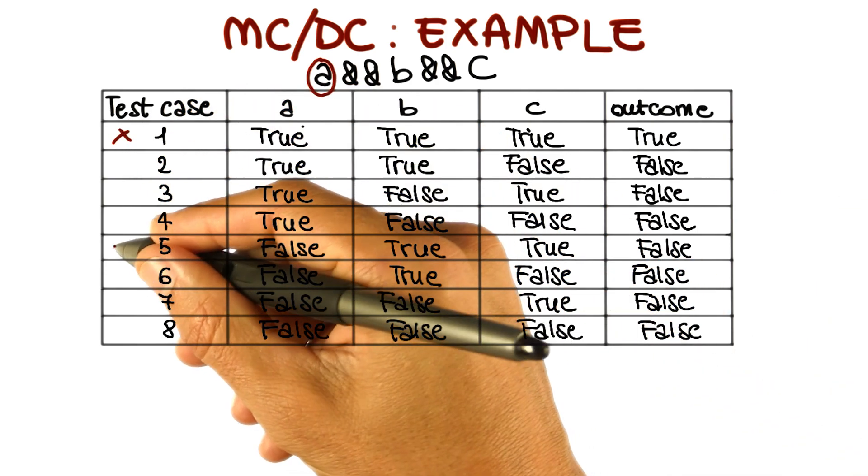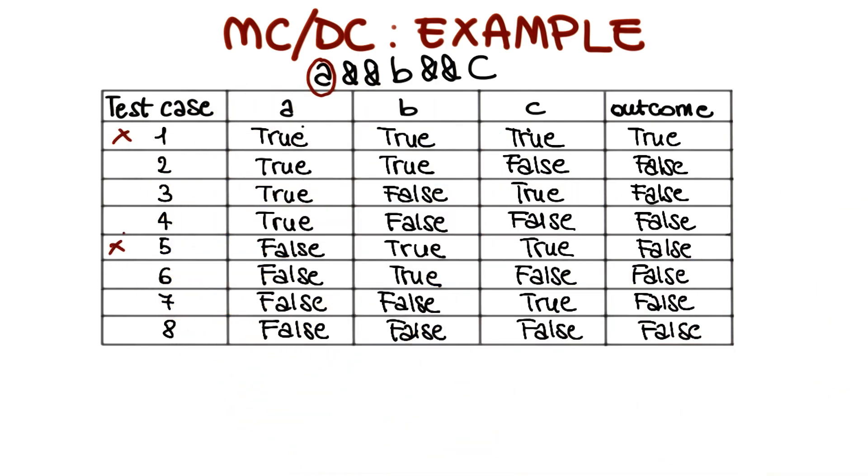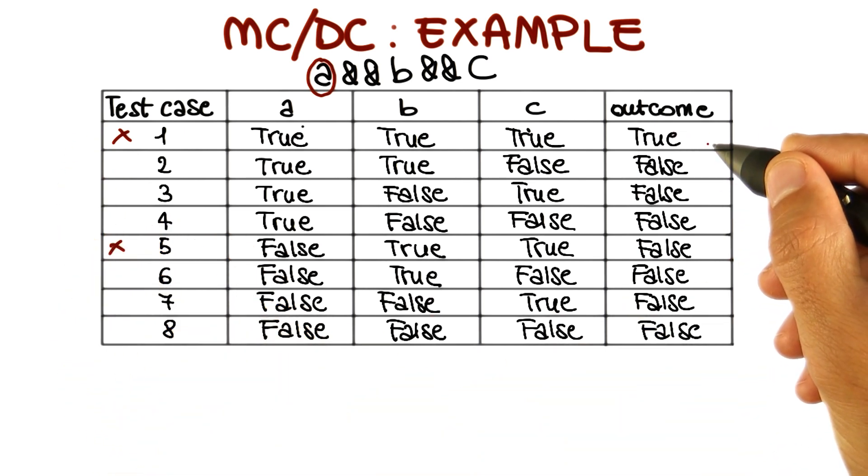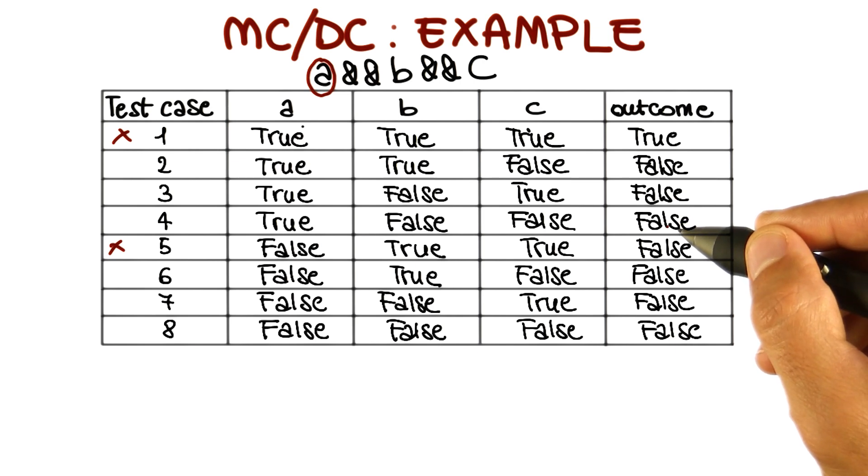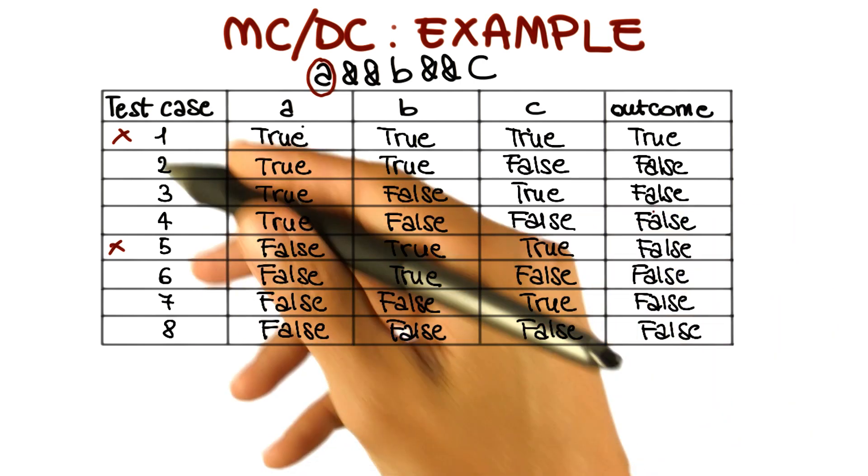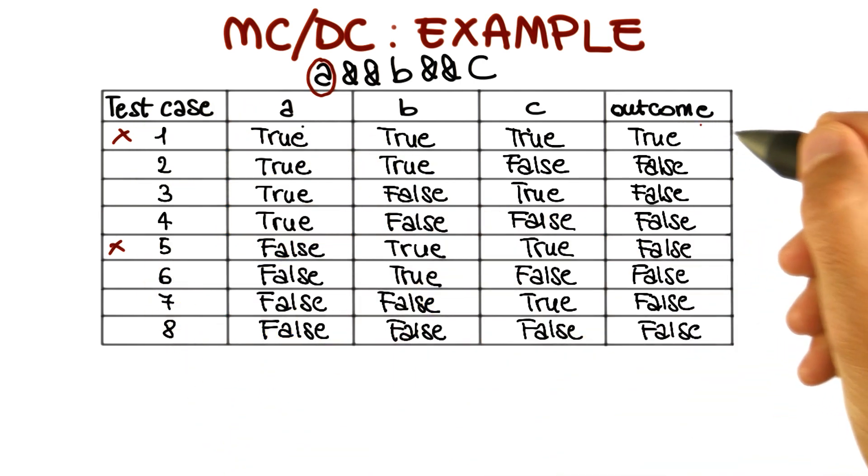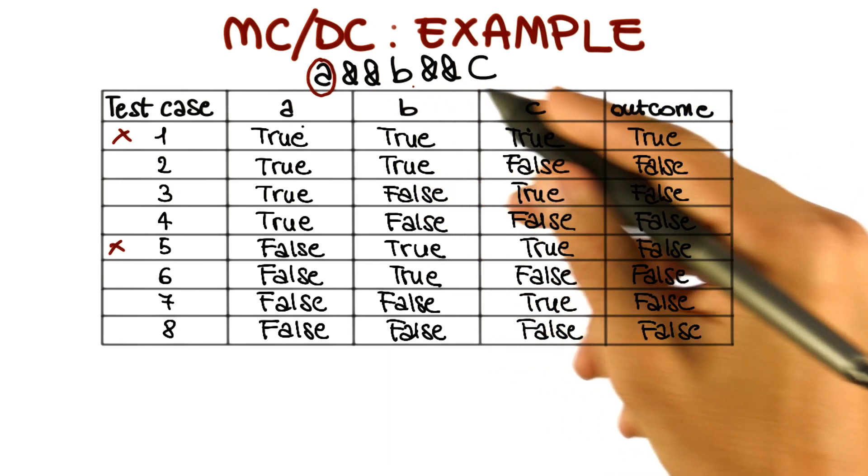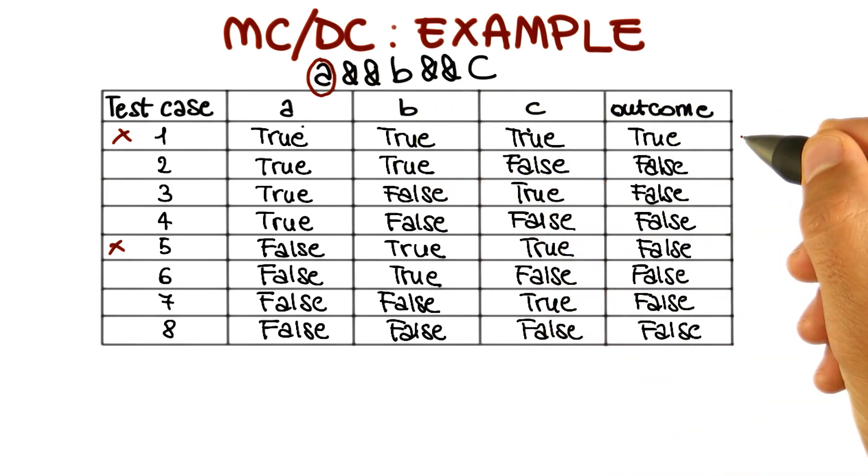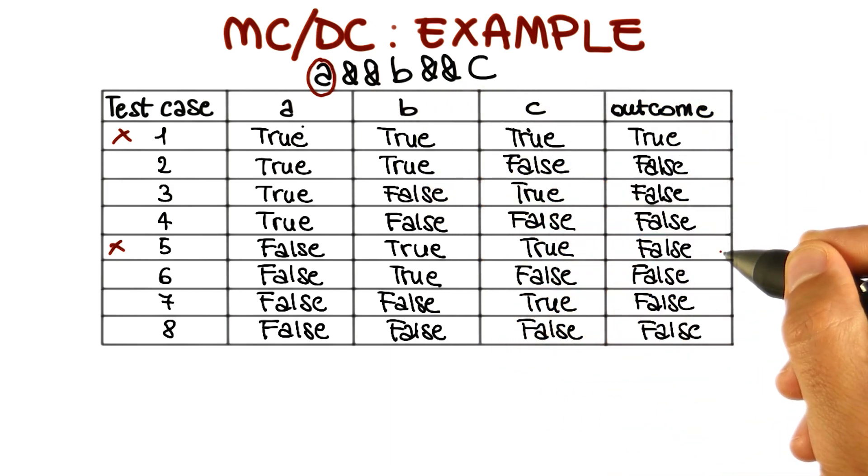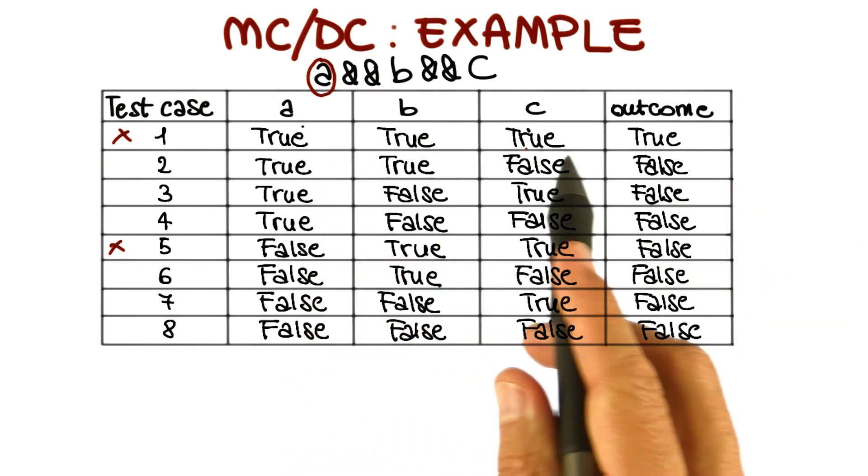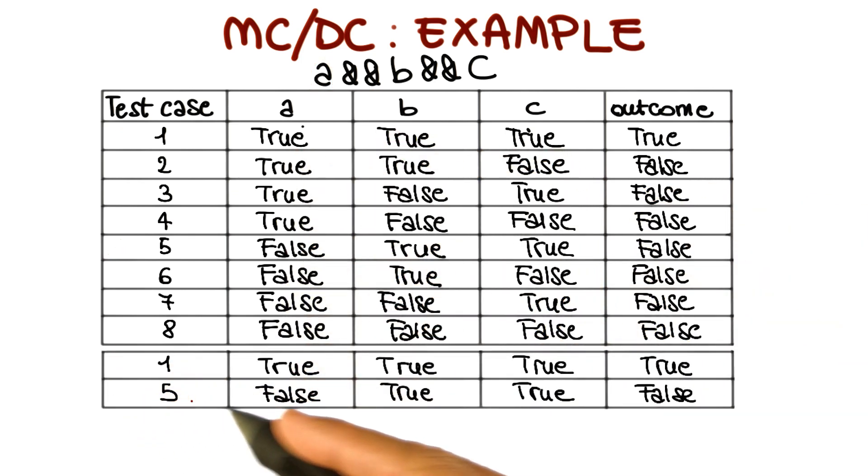If we look at the table, we can see that this is true for test cases one and five. If we look at these two test cases, we can see that the overall value of the predicate in the two cases is true and false, and that the only difference between the value of the conditions is in the value of A. So these two test cases satisfy exactly what we wanted. There are two test cases in which the value of A independently decides the overall value of the predicate. What we do, therefore, is add these first two test cases to our set of tests.